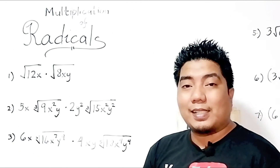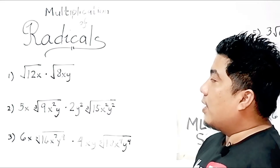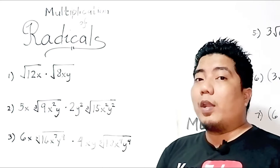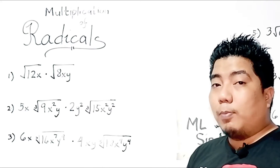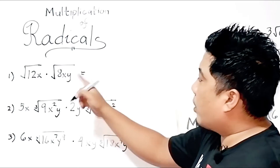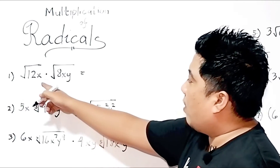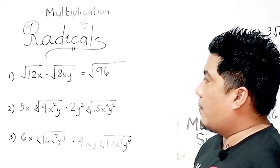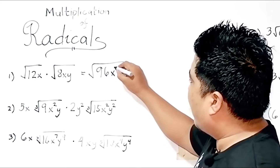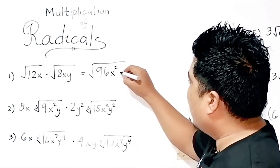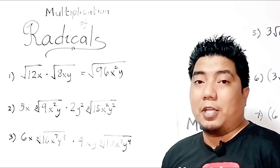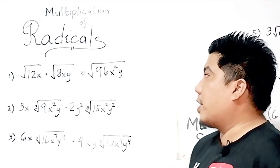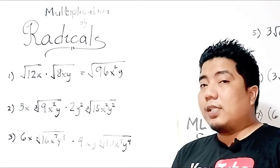Let's consider the first example. We have the square root of 12x times the square root of 8xy. Both radical expressions are in the square root, so the index is both 2. If that is the case, then you can multiply them directly. So the square root of 12 times the square root of 8 will give you the square root of 96. x times x will be x squared. And since there is a y in the other factor, you just copy the y. Now the question is: is this our final answer?